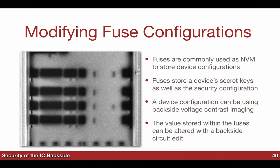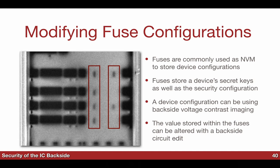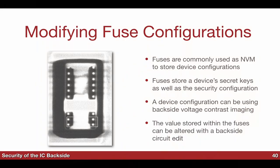Sie benutzen einfach programmierbare Sicherungen. Was wir hier sehen, ist ein Bereich auf einem Mikrocontroller. Hier sehen wir die Sicherung — man kann mit dem bloßen Auge sehen, welche Sicherungen gesetzt wurden und welche nicht. Der Grund dafür ist das FIB-Bild mit sekundären Elektronen.